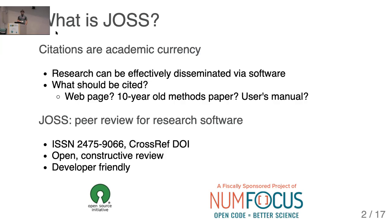JOSS provides peer review for research software and it's a real journal — it's indexed, we have CrossRef DOIs, there's an editorial board that's growing relatively large now. The review process is open and we focus on constructive review. The process is very developer-friendly, so the review takes place on GitHub. JOSS is a partner with the Open Source Initiative and it's a sponsored project of NumFocus.